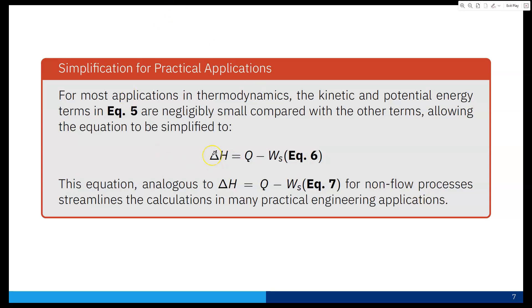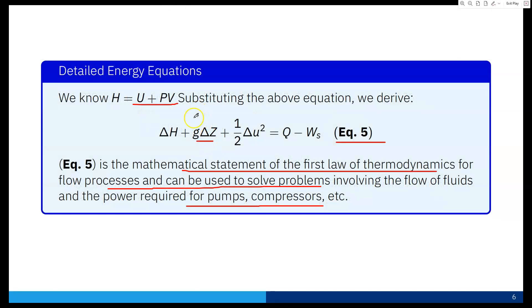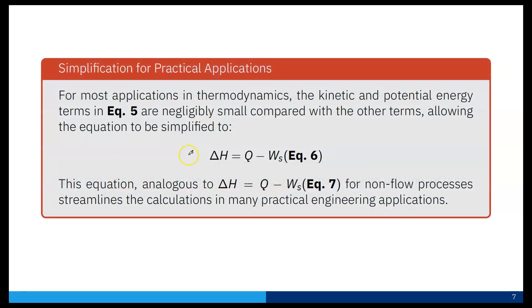Generally in flow processes we neglect the potential energy and kinetic energy, so this equation becomes ΔH equals Q - Ws. This equation, analogous to ΔH equals Q - Ws for non-flow processes, streamlines the calculation in many practical engineering applications.